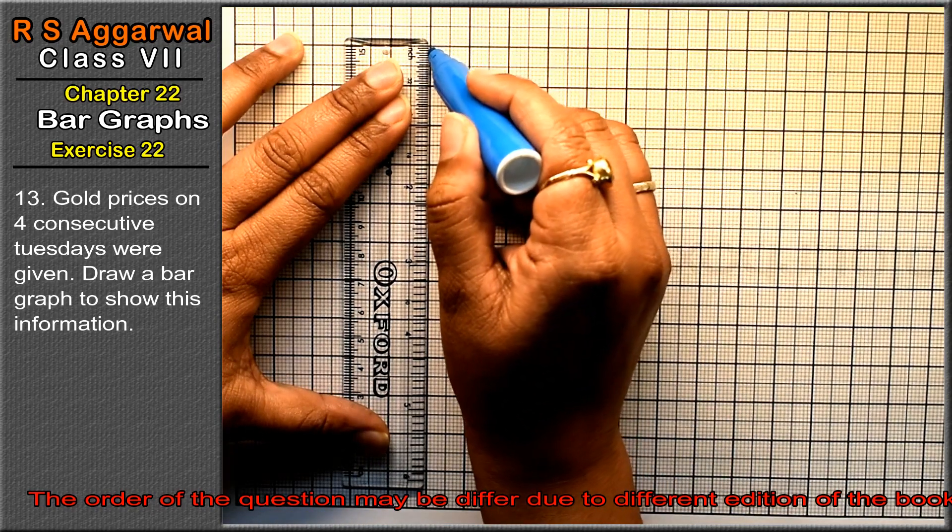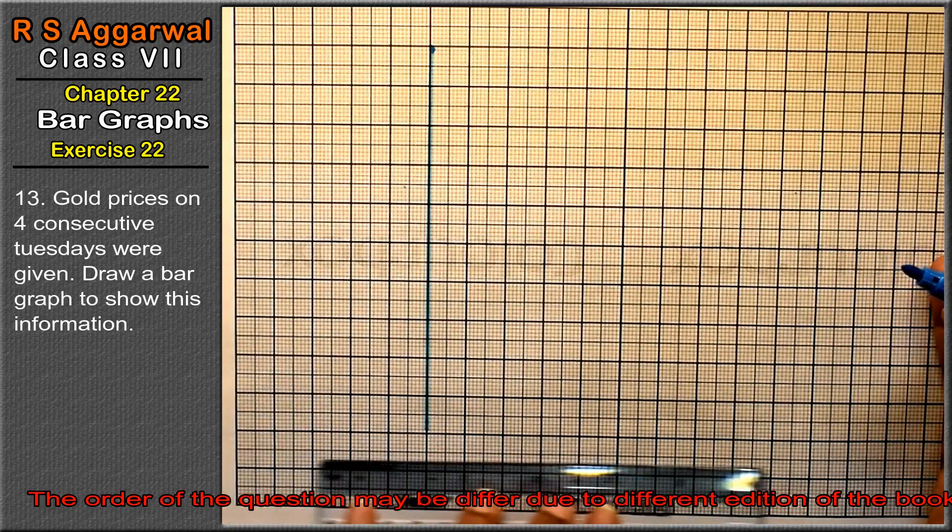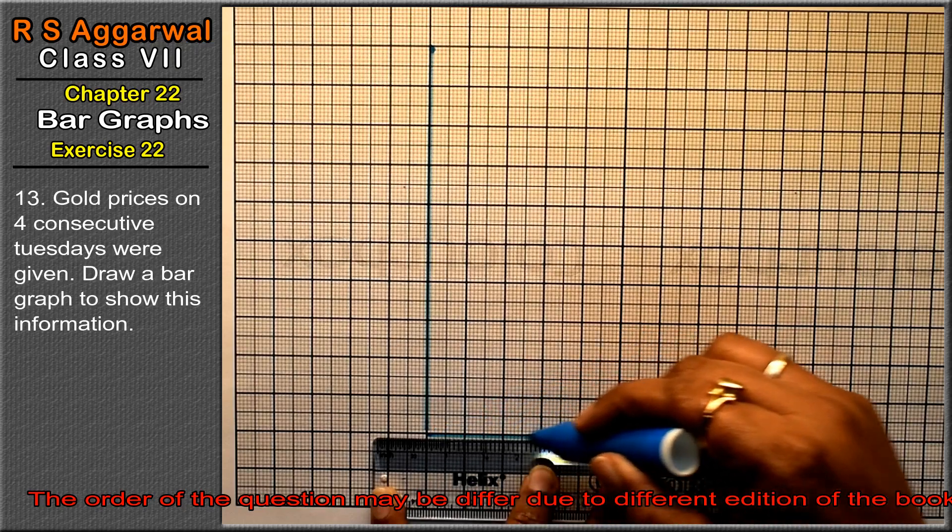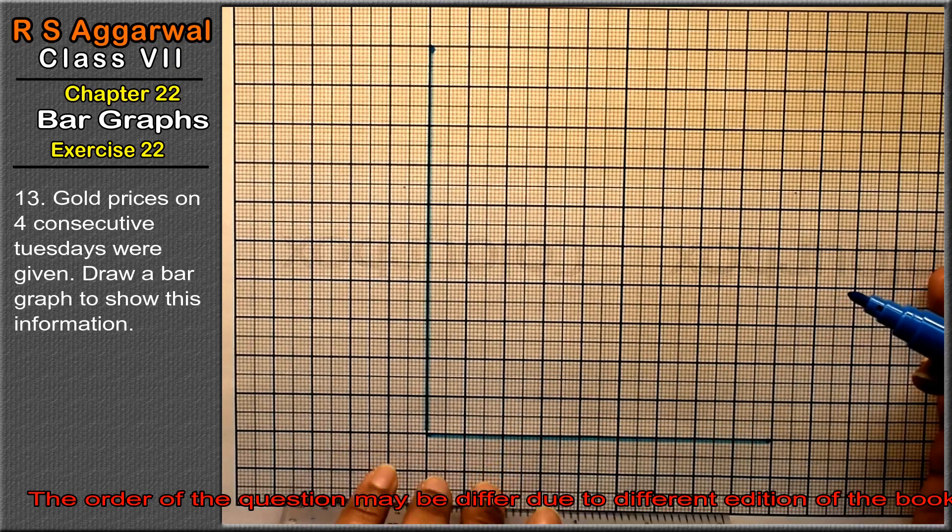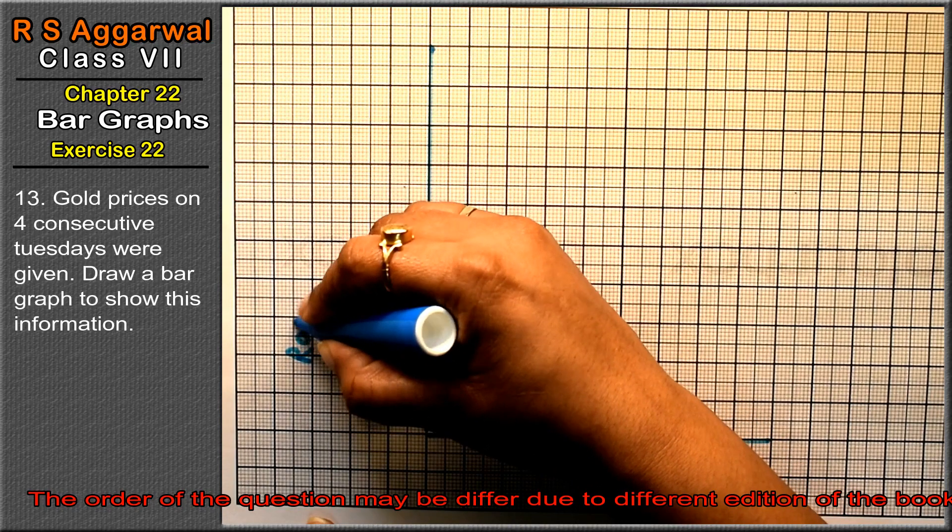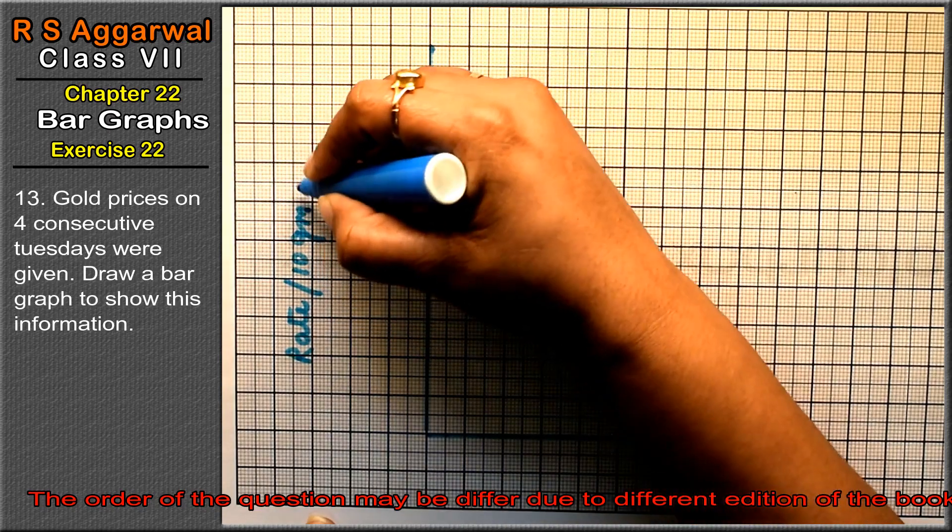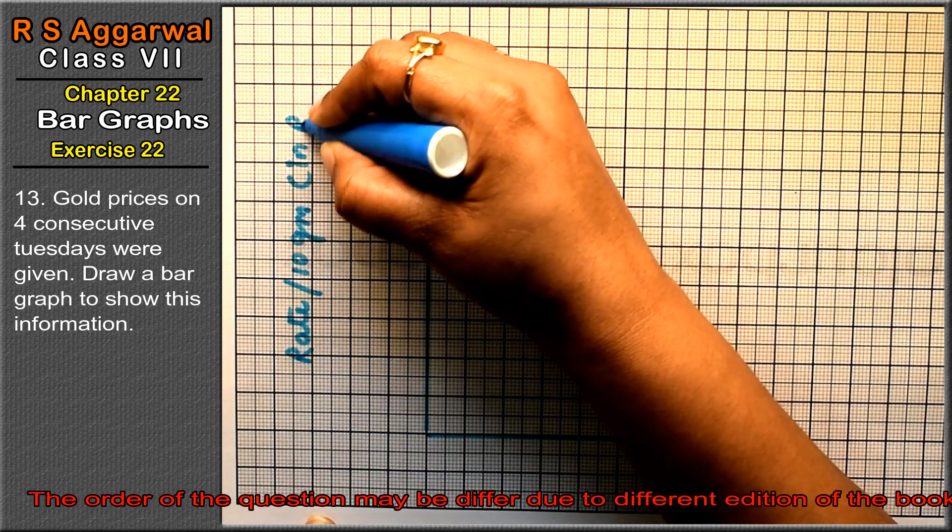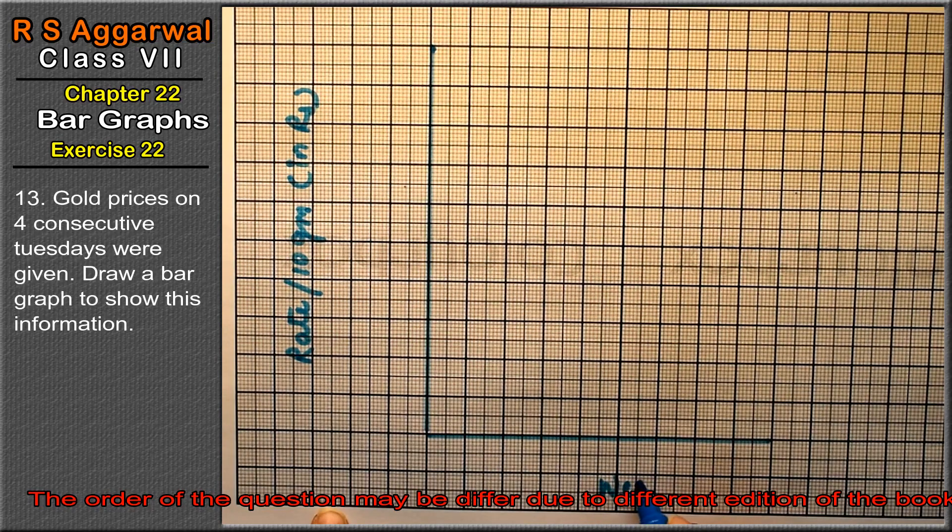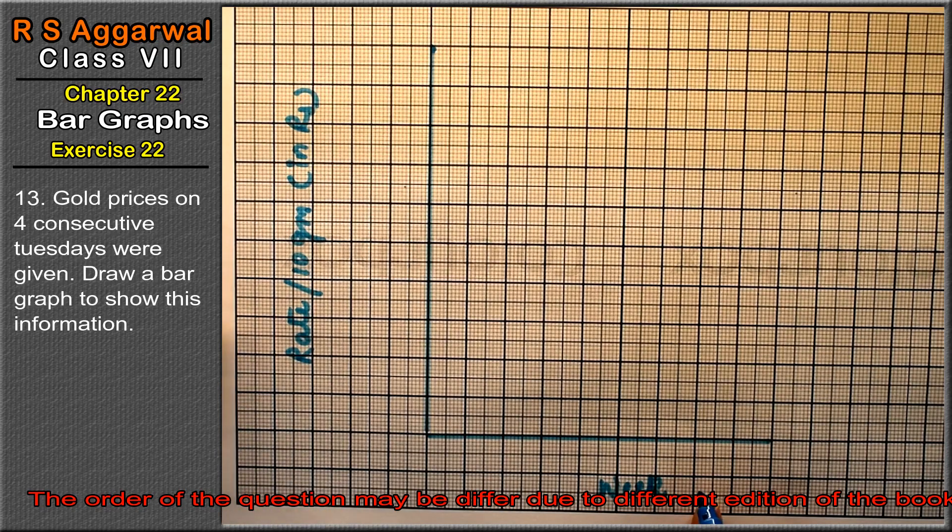This will be our y-axis and this will be our x-axis. And here we have rate per 10 grams in rupees. And here we have week. So first we have 1 small division is 100, so 10 divisions is how much? 1,000.